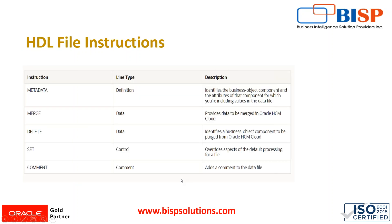Next, we have HDL file instructions. Whenever we import or load data, we must follow certain rules and instructions provided by Oracle to perform HDL in Oracle HCM Cloud. There are five instructions: metadata, merge, delete, set, and comment. Metadata identifies the business object component and the attributes of that component for which you are including values in the data file — essentially it defines the header information, such as effective start date, effective end date, job code, set code, and name.